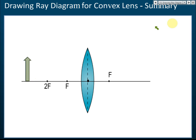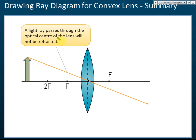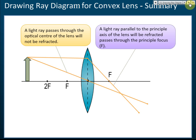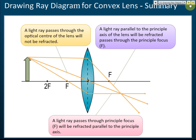Let's see how we draw the ray diagram. We have an object here. Applying rule number one: a light ray passes through the optical center, so no refraction — it moves straight forwards. Applying rule number two: the light ray is parallel to the principal axis, so it will pass through the principal focus. Then applying rule number three: passing through the principal focus, it will be refracted parallel to the principal axis.